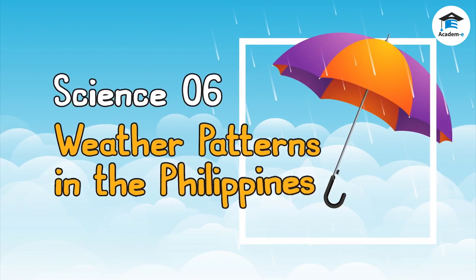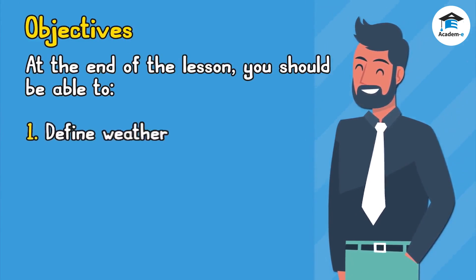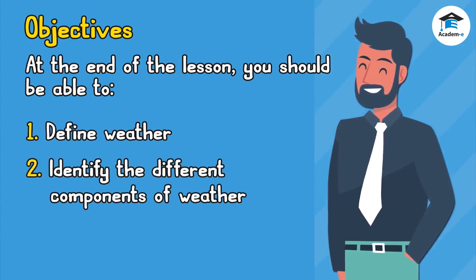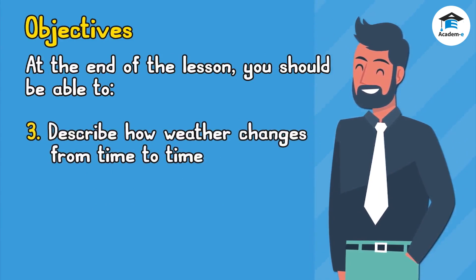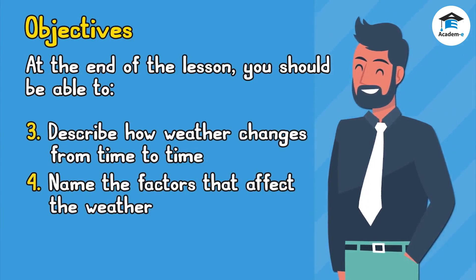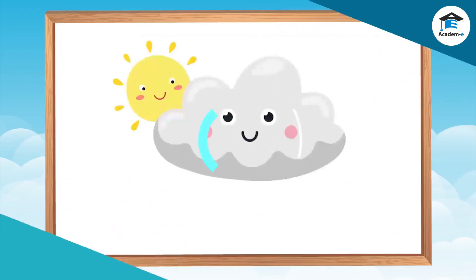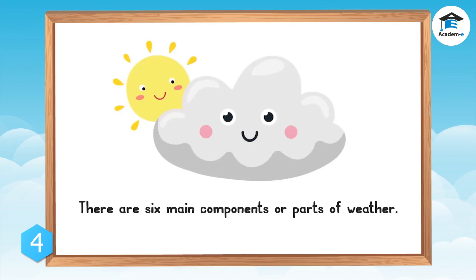Science 6: Weather Patterns in the Philippines. At the end of the lesson, you should be able to define weather, identify the different components of weather, describe how weather changes from time to time, and name the factors that affect the weather. Weather is defined as the current condition of the atmosphere at a specific time and place.